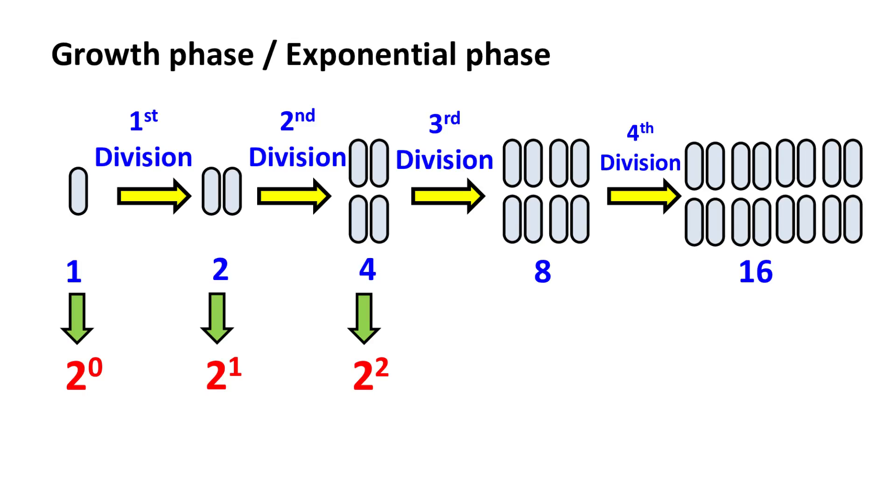Further, four cells divides into eight cells, hence this can be represented as two raised to three, which is eight. Eight cells will then divide to form sixteen cells, hence this can be represented as two raised to four, which is sixteen.